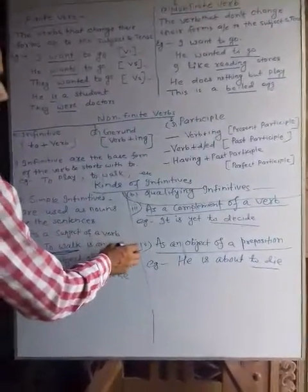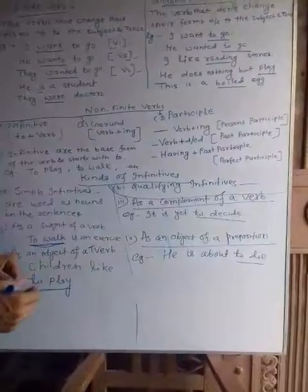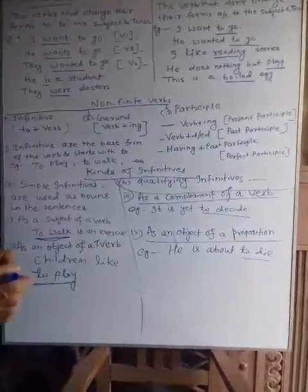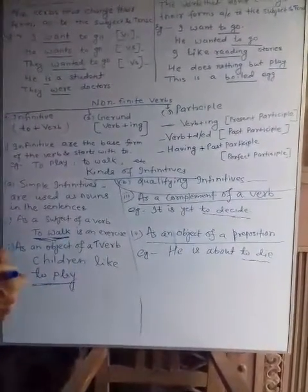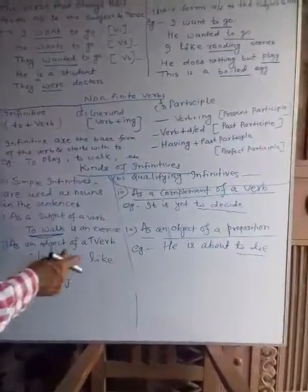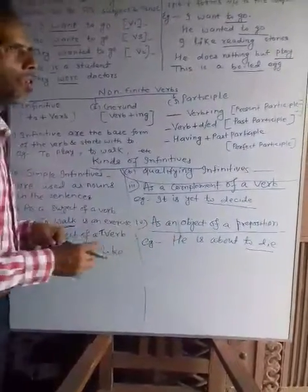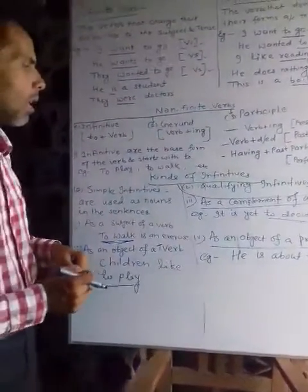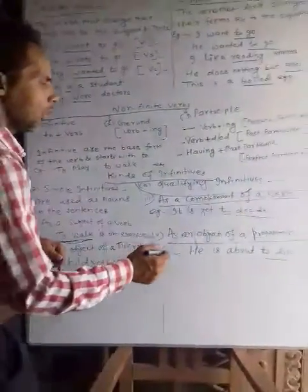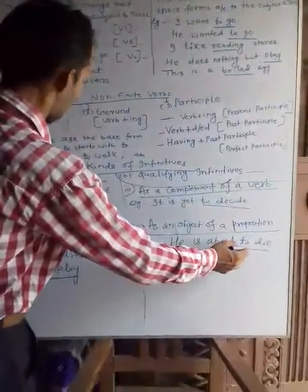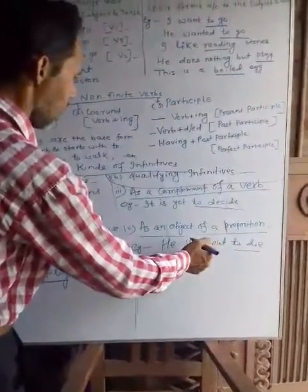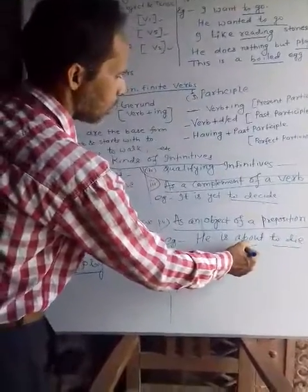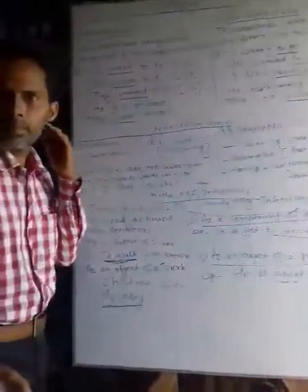And of course, as an object of a preposition — it may be used as an object of a preposition. For example, 'He is about to die.' Here, 'to die' is the infinitive, and 'about' is the preposition.